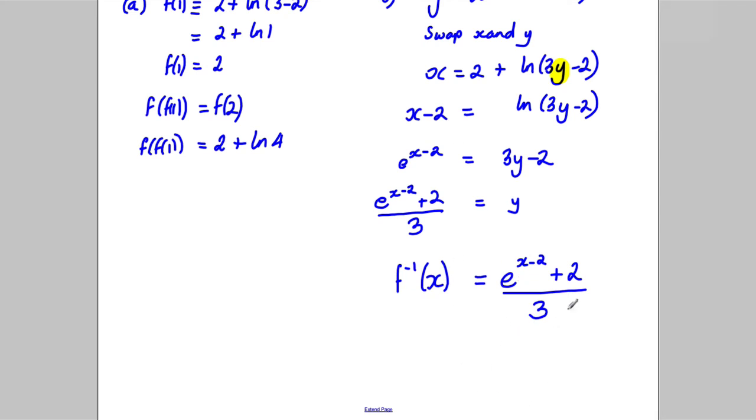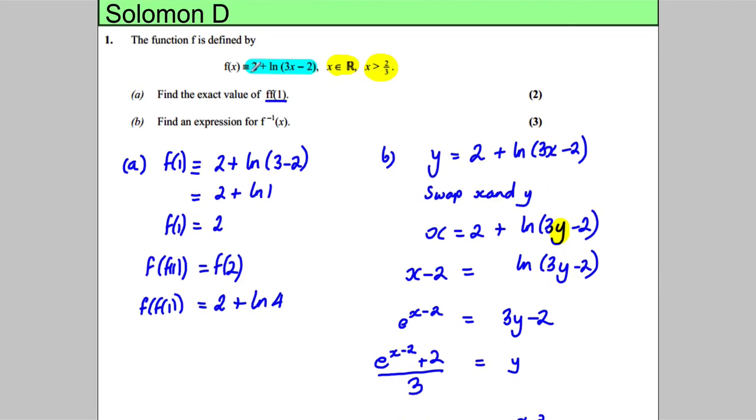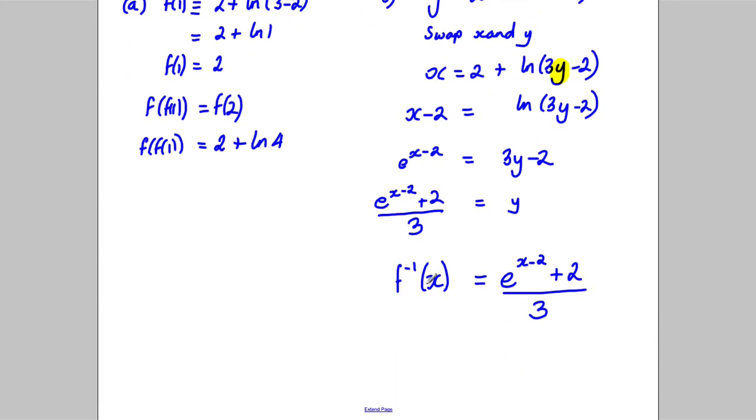It's worth thinking about the domain - what x values you're allowed to put in. Looking at this, there's no x values that would cause trouble with this function. The range of the original function is a logarithm function, and the range of that is all real numbers. So the domain of the inverse is all real numbers. You could write x is a member of the reals as well, but it's not needed for a mark in this question.